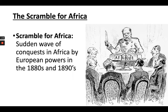So what do I mean when I say the Scramble for Africa? This is a term commonly used in history classes, especially for the sudden wave of conquests in Africa by European powers in the 1880s and 1890s. We see that Britain will obtain most of East Africa, France Northwestern Africa, and then Germany, Belgium, Portugal, Italy, and Spain will all acquire lesser amounts.